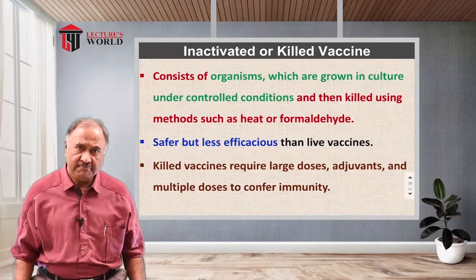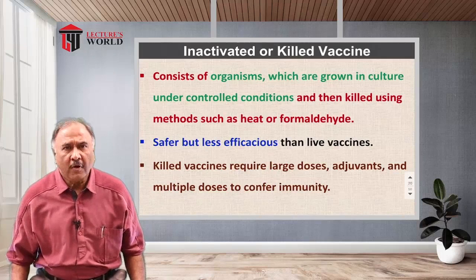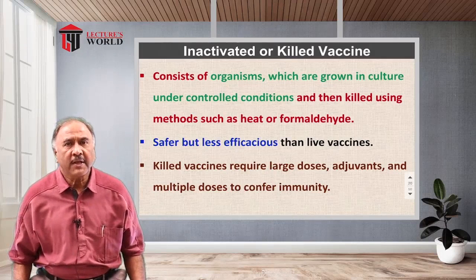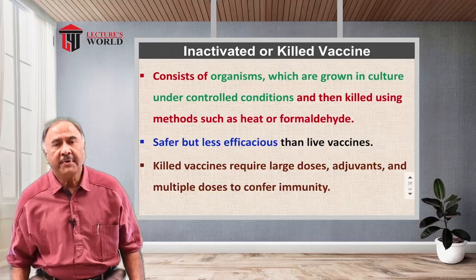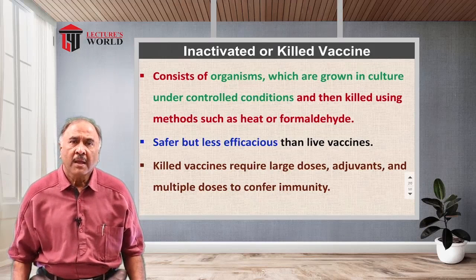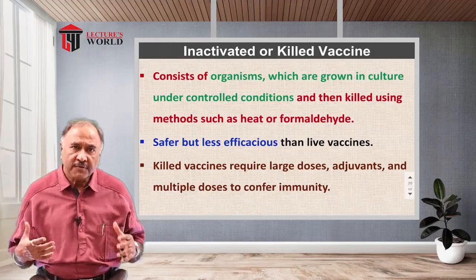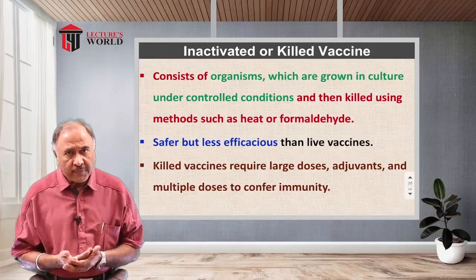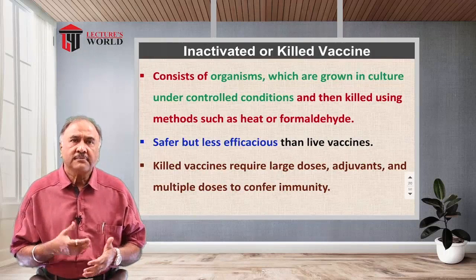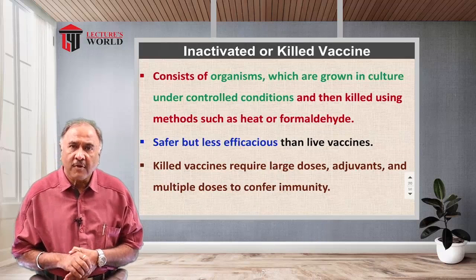For example, heating organisms at a certain temperature for a few minutes would inactivate and kill them. Alternatively, exposure to chemicals like formaldehyde will also kill the organisms. So first, virulent organisms are grown, and then they are killed either by heat or by chemicals like formaldehyde.